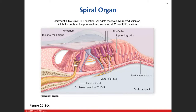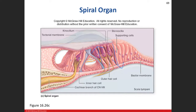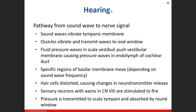The spiral organ has one row of inner hair cells and three rows of outer hair cells — they all have stereocilia and a kinocilium on top. The spiral organ sits on the basilar membrane, and the stereocilia and kinocilium are embedded into the tectorial membrane above. When the basilar membrane moves up or down, it pushes the spiral organ into the tectorial membrane, stimulating the stereocilia.